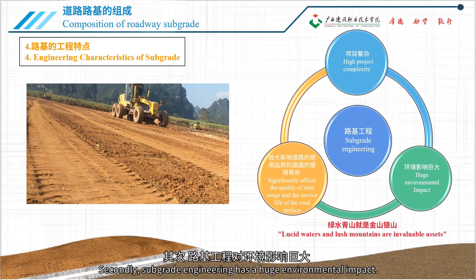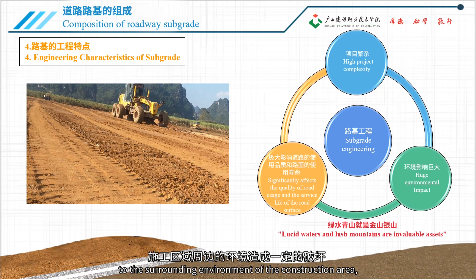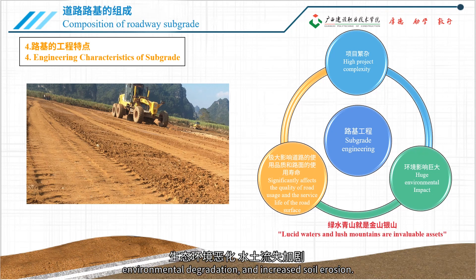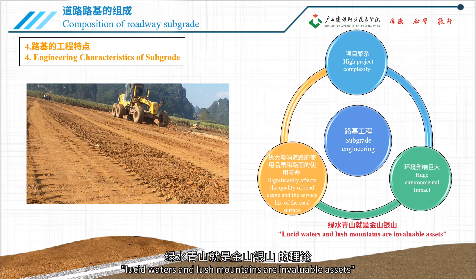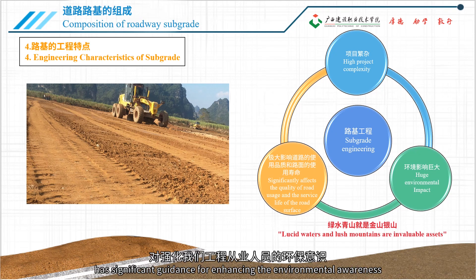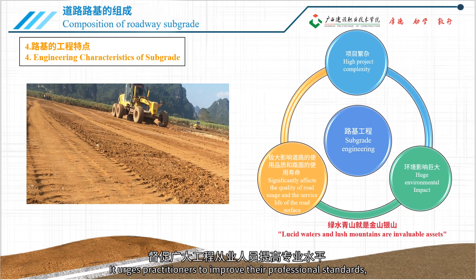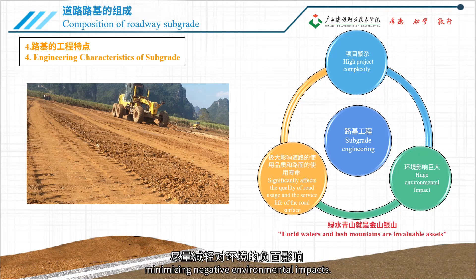Secondly, subgrade engineering has a huge environmental impact. The construction process inevitably causes certain damage to the surrounding environment, which may lead to vegetation destruction, environmental degradation, and increased soil erosion. President Xi Jinping's theory that lucid waters and lush mountains are invaluable assets provides significant guidance for enhancing environmental awareness, urging practitioners to humanize, standardize, and refine throughout the project's lifecycle, minimizing negative environmental impacts.